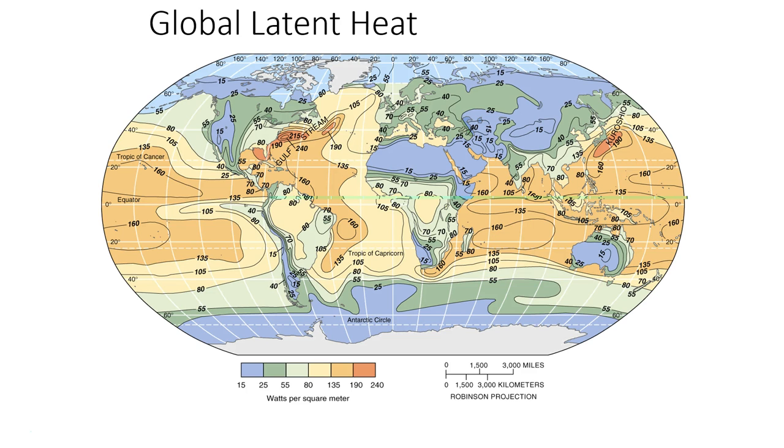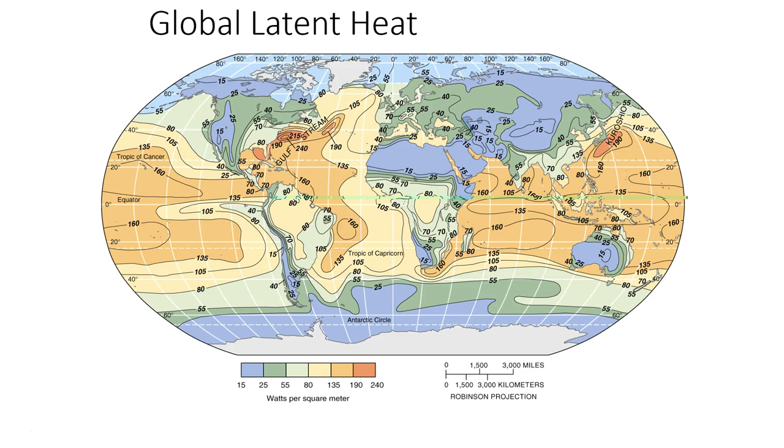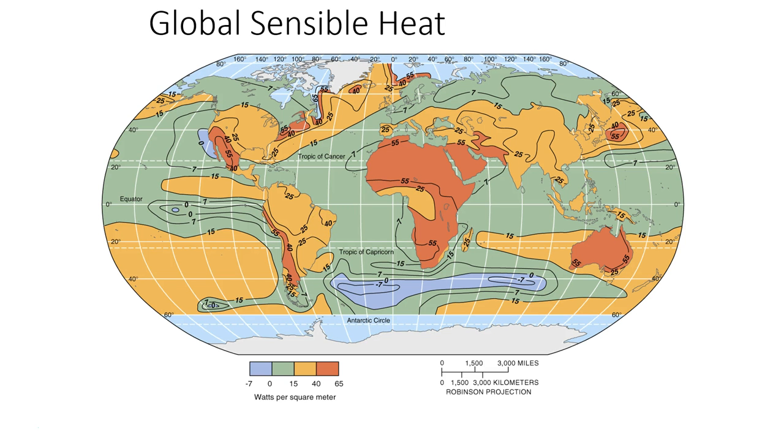To conclude for this video, when we look at the broad distribution of global latent heat and sensible heat here, the highest values of latent heat generally occurring over warm water bodies, such as the Gulf Stream, warm water that's moved northward in the Atlantic Ocean, and much lower latent heat values over land masses. Conversely, much higher sensible heat values over large land masses, and much lower values or negative values over areas of large water bodies.